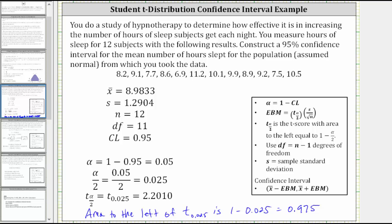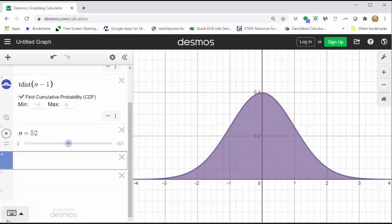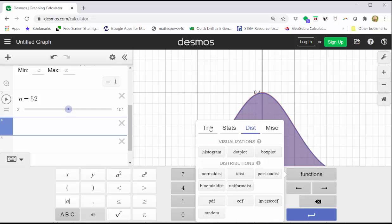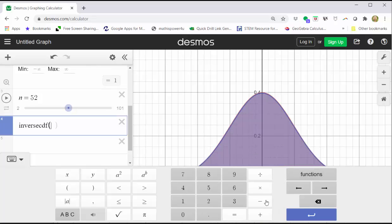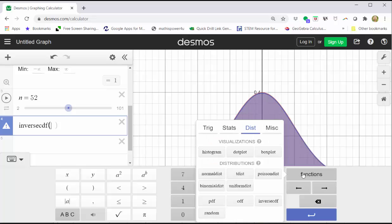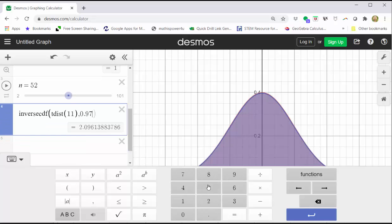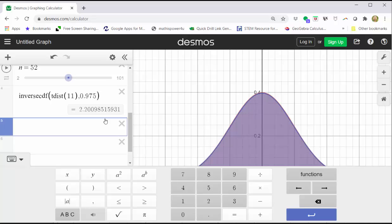Or using Desmos.com, go down to cell four, open the Desmos keypad, click functions. Under the distributions menu, click inverse CDF. Go back to functions, click t-distribution, enter the degrees of freedom, which is 11. Right arrow, comma, the area to the left, which is 0.975. Enter. And we do get the same result.